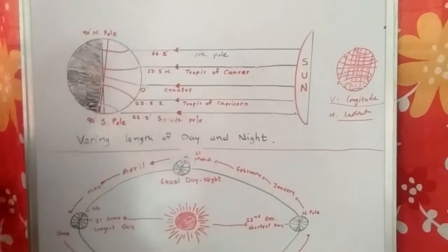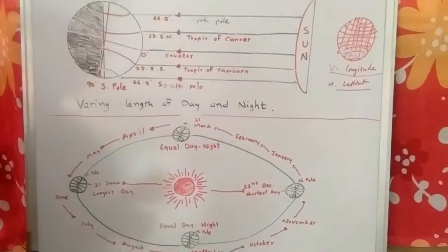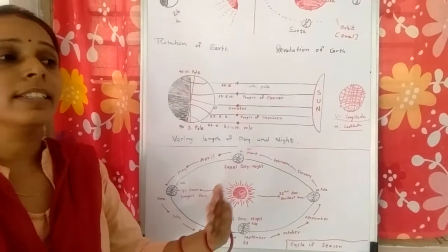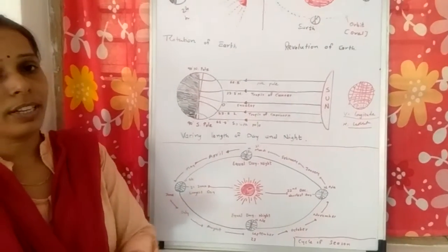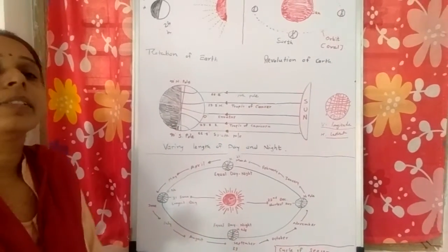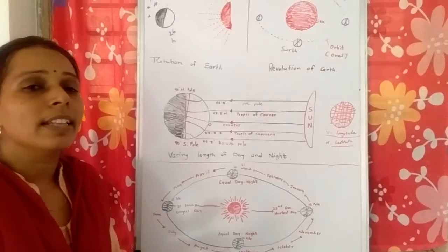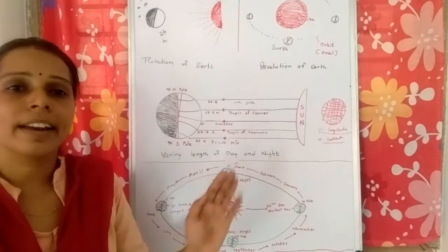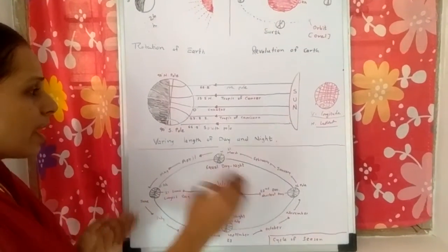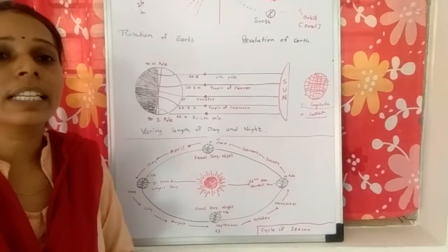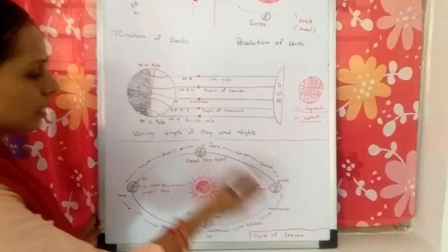Now, varying length of day and night — according to the season, sometimes days are longer and nights are shorter, and sometimes days are shorter and nights are longer. In the summer season, the days are longer and nights are shorter, and in winter the days are shorter and nights are longer. Let's learn how day and night become long and short, and how the seasons change, from these figures.